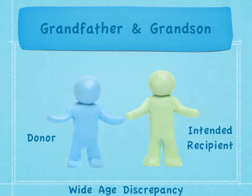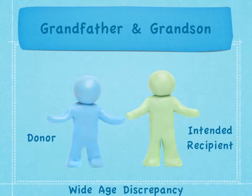The next example is a grandfather and grandson. The grandfather is 69 years old and needs a kidney transplant; his grandson would like to donate a kidney, however the grandson is 23 years old. This pair, although blood type and cross-match compatible, could choose to participate in kidney paired donation because it could allow the grandfather to receive a kidney from someone closer to his own age, while the grandson could donate to someone young who may have more years to benefit from receiving a young, healthy kidney.